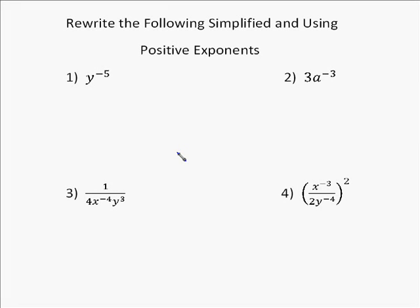These four problems illustrate the use of negative exponents. It's important to remember that if you've got anything raised to a negative exponent, you just take the reciprocal and make the exponent positive. So y to the negative fifth just equals 1 over y to the positive fifth.